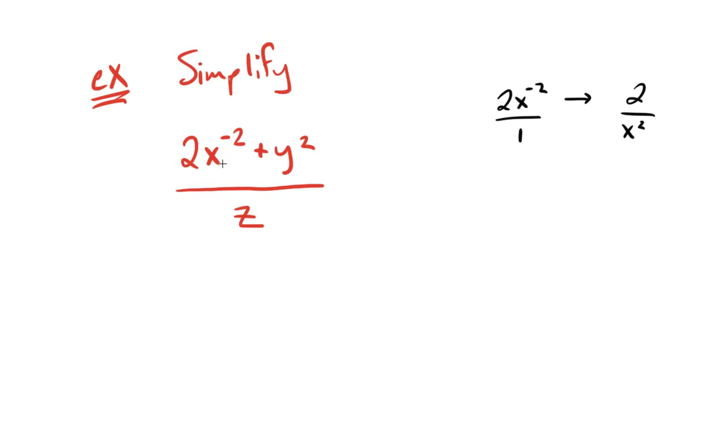Now, here's the issue. This is going to go into its own denominator. It does not go into the denominator with z, because this z also isn't a denominator for y squared. If we put that x squared down here with the z, that would mean it had something to do with the y squared, but it doesn't.